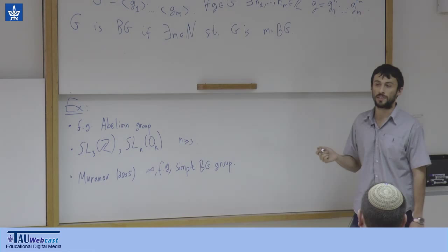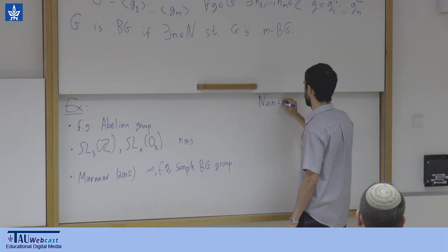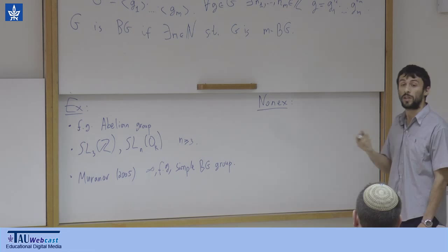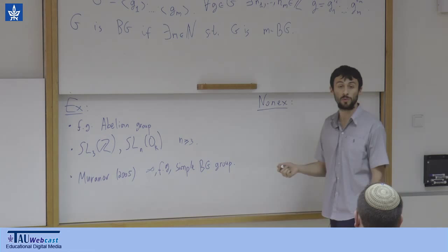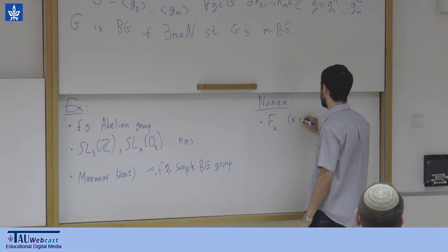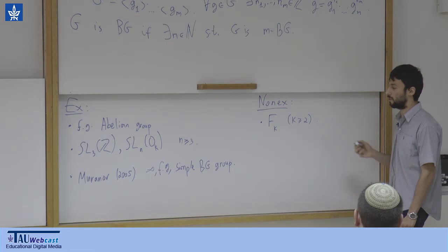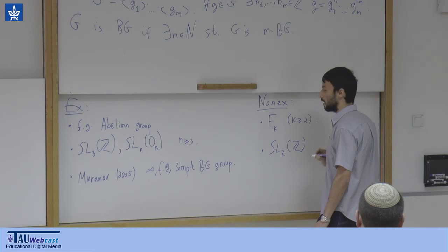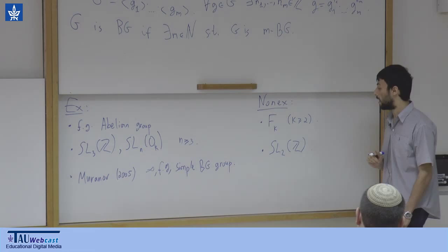Now for non-examples. Naively we could think that maybe every finitely generated group is boundedly generated — but the free group is the key counterexample. If the free group were boundedly generated, then any image of it, i.e., any finitely generated group, would have to be boundedly generated. So the first non-example is the free non-abelian group on at least two generators.